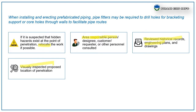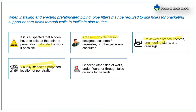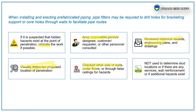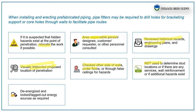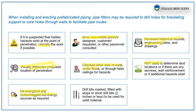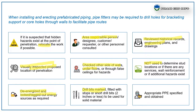Check the other sides of walls, under floors, or through wall ceilings for hazards. NDT should be used to determine stored locations or if there are any services, wall reinforcements, or additional hazards. De-energized and lockout/tagout systems to be followed as required. Drill bits to be marked and fitted with stops, or short drill bits to be used. Appropriate personal protective equipment must be specified and obtained.